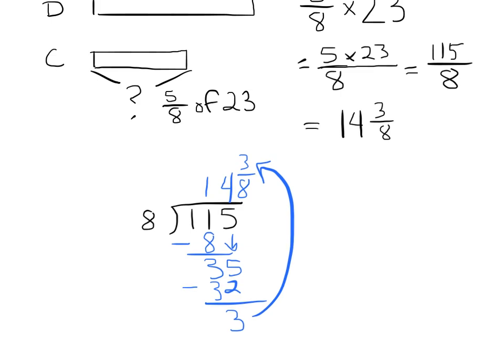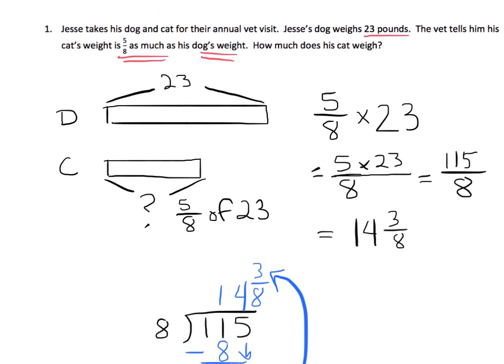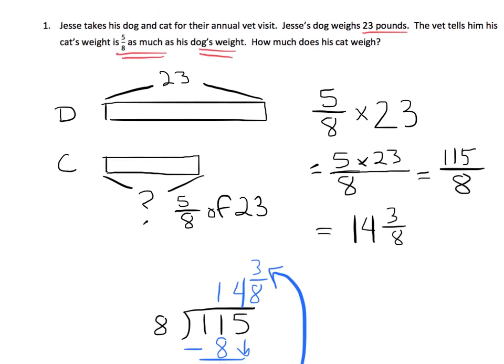So the answer is 14 and 3 eighths. Now what is 14 and 3 eighths? That is the cat's weight right here, 5 eighths of 23, so 5 eighths of 23 means 5 eighths times 23. When we multiply, we get 115 eighths, which, when simplified, is 14 and 3 eighths pounds is the size of the cat.